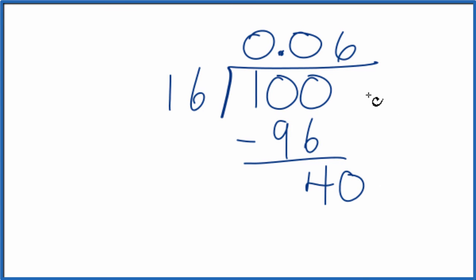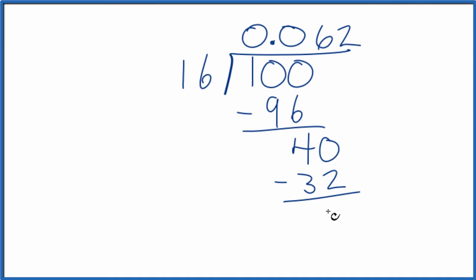Let's call this 40. We'll move over another decimal place. 16 goes into 40 two times because 2 times 16 is 32. So we're left with 8.